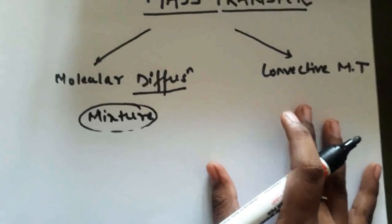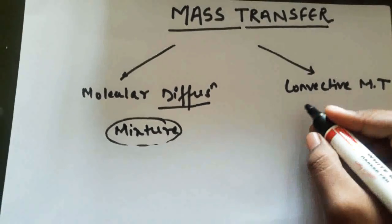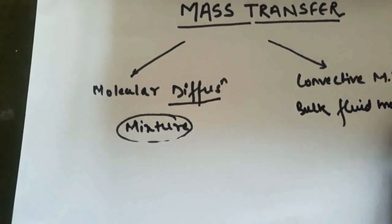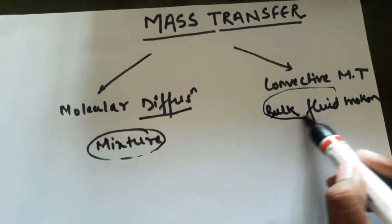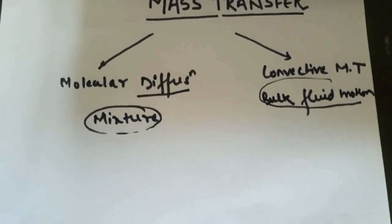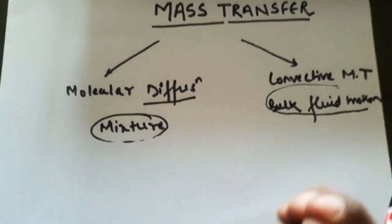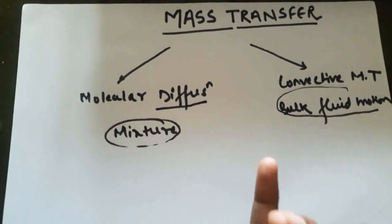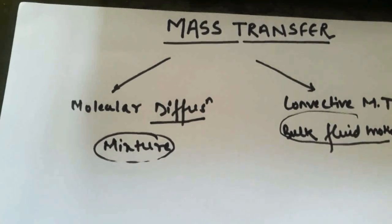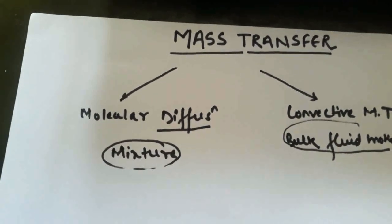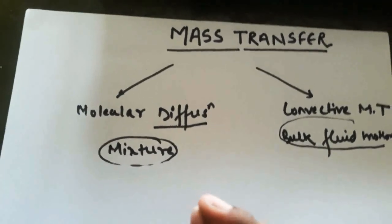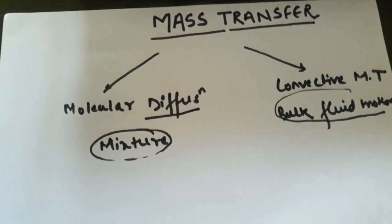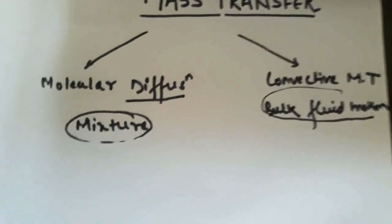In convective mass transfer, the mass transfer occurs in the presence of a bulk fluid motion. So the keyword here is bulk fluid motion. In molecular diffusion the diffusion occurs in a mixture — it can be salt water, sugar water, or any solid-liquid or gas-liquid combination — as long as there is a concentration difference of at least one particular molecule.